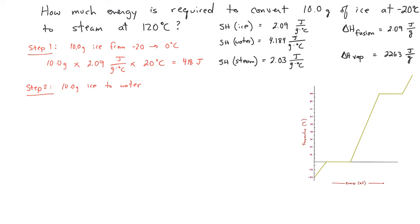Step two is to convert the 10 grams of ice into water. For that we use the heat of fusion, which is 334 joules per gram. We take our 10 grams and multiply by 334 joules per gram — the grams cancel — giving us 3,340 joules for step two.